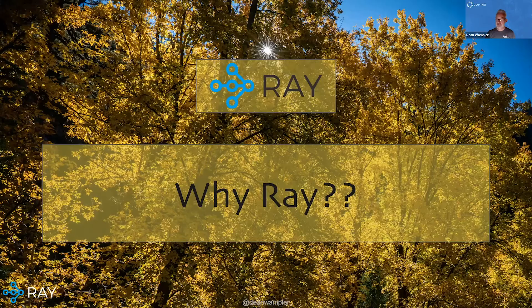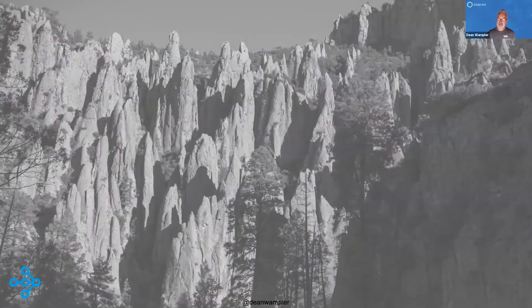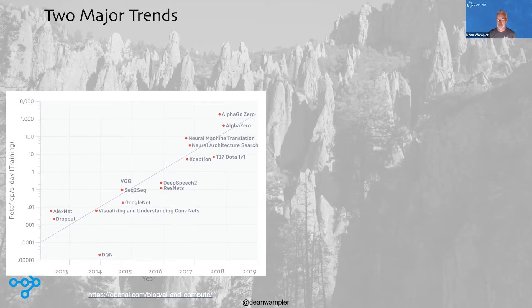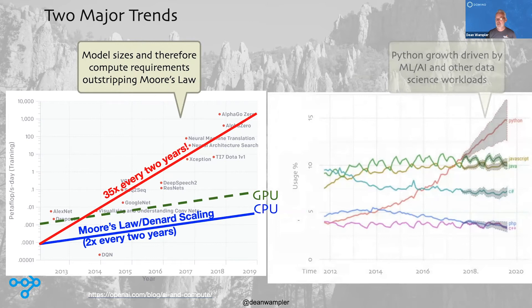Why Ray? What problem is it solving? It emerged out of a couple of problems we faced in the industry. This chart on the left is a log chart of the compute required to train neural networks — from toy examples to natural language processing neural networks on the order of 200 billion parameters requiring millions of dollars of compute resources to train. It's been exponential growth, basically 35 times each year, while Moore's law has only grown about 2x per year. So we have to distribute — that's the only way we're going to solve this problem. Even GPUs are not going to get us out of this conundrum.